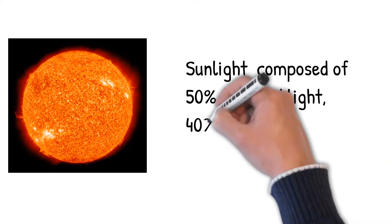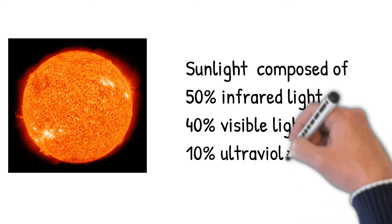Sunlight is composed of 50% infrared light, 40% visible light, and 10% ultraviolet light.